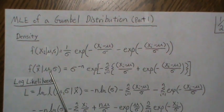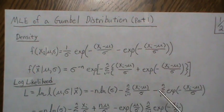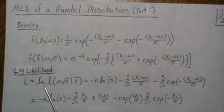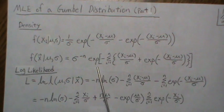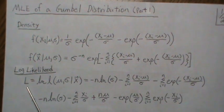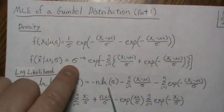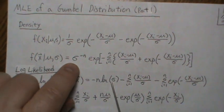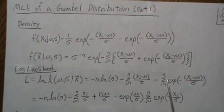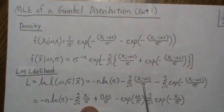This is the joint density, but if we think about it differently — fixing the data and treating μ and σ as the variables — it becomes a likelihood function. We then take the log of the likelihood to get the log-likelihood L, which is the natural log of the likelihood. The log simplifies things: −n comes out front, the log of σ term appears, and the exponent drops out directly.